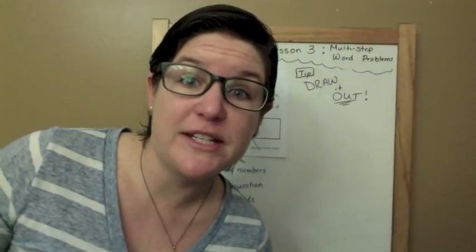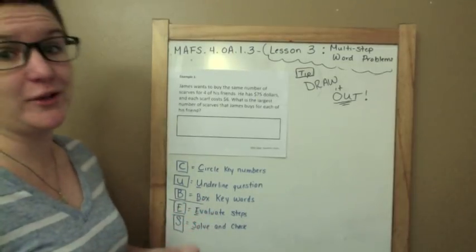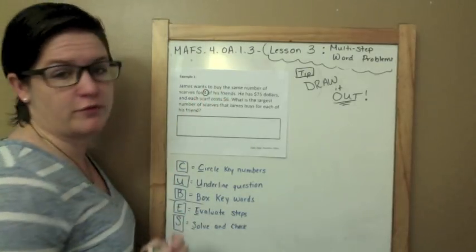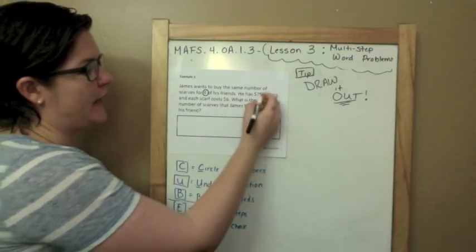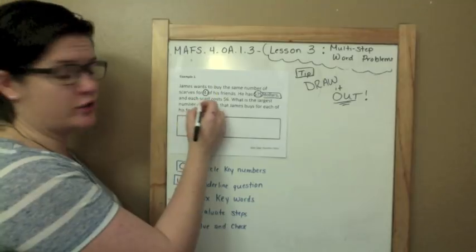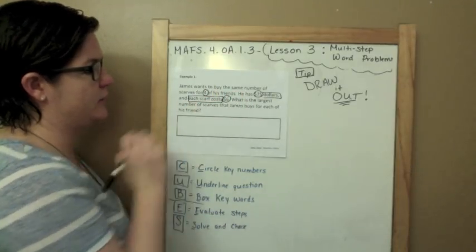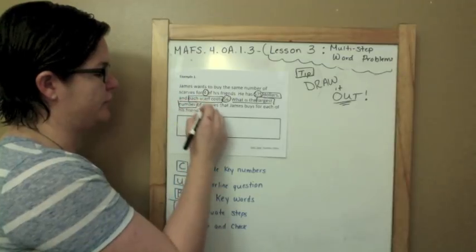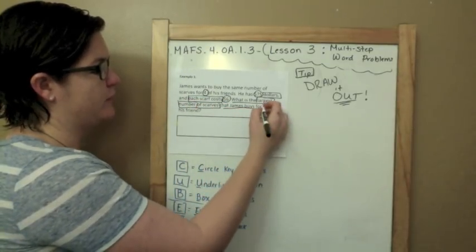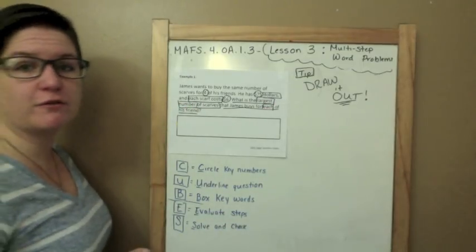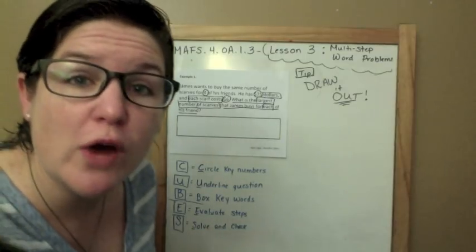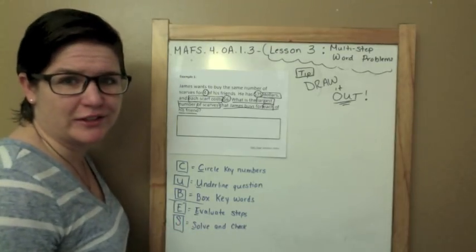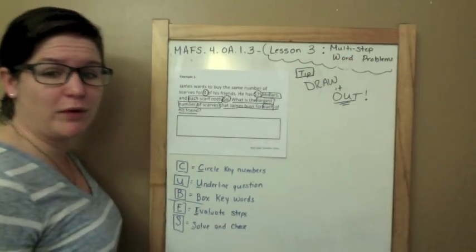Let me teach you example one. Of course I'm going to use my CUBES strategy today. James wants to buy the same number of scarves for four of his friends. He has $75 and each scarf costs $6. What is the largest number of scarves that James buys for each of his friends? This is a wordy problem. Do not run, do not hide, stick with me. You don't just read it one time either. This is a long problem, there's a lot of steps involved. Again, it's a multi-step word problem. You've got to stick with it, you've got to draw it out one step at a time.